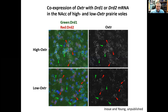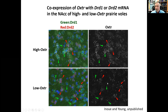We've also recently done RNA scope and fluorescent in situ hybridization to look at D1 and D2 receptors along with oxytocin receptors in the nucleus accumbens. The green cells are D1 receptor cells, the red cells are D2 receptor cells, and white is oxytocin receptor. High-genotype animals express oxytocin receptors in both D2 and D1 cells, but the low-expressing genotype still expresses in D2 cells but essentially not in D1 cells. So this genetic polymorphism affects oxytocin receptor expression specifically in D1 dopamine neurons — a pretty cool mechanism to get diversity.